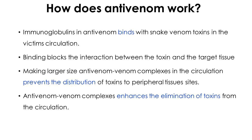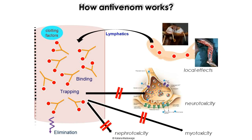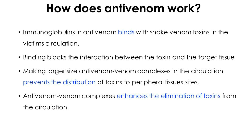Regarding the mechanism of action of antivenom: immunoglobulins in antivenom bind with snake venom toxins in the victim's circulation and block the binding of toxins to target tissues — this is known as neutralization of the toxins. The antivenom-venom complex, being a larger molecule, prevents venom from reaching peripheral sites. Elimination of the antivenom-venom complex is achieved via the reticuloendothelial system and finally through renal clearance.